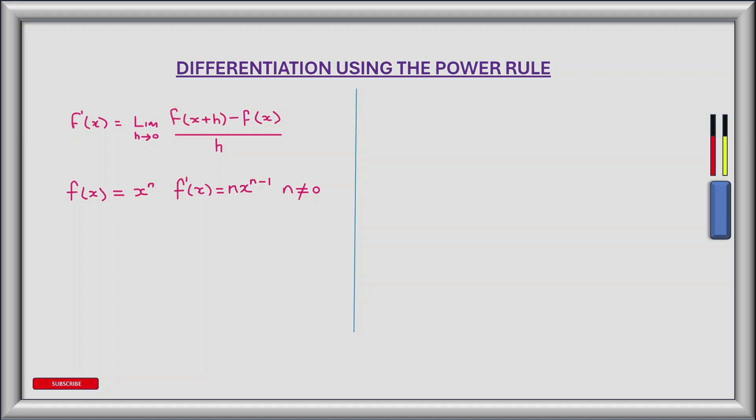This allowed us to find the gradient of a tangent to a function f of x. The good news is there is an easier way of finding derivatives. So let's say we have a function f of x equal to x to the power n, where n is not equal to 0. The derivative of f of x, or f prime of x, is then equal to n multiplied by x to the power of n minus 1. So let's see how this can be applied to a real polynomial.